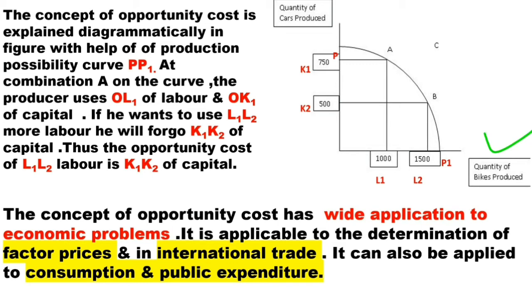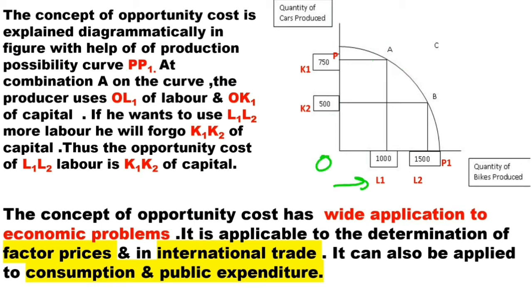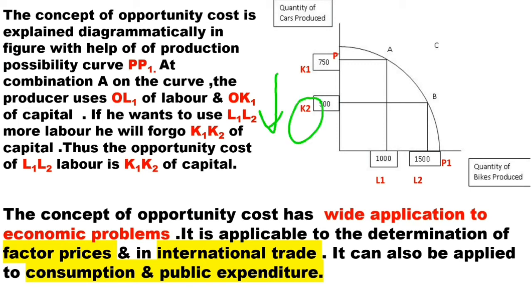On the x-axis, I have the quantity of bikes produced, and on the y-axis, the quantity of cars produced. For this concept, I am using the PPC — Production Possibility Curve. P to P1 is my production possibility curve. At combination A, the producer is using OL units of labour and OK1 units of capital. If the producer wants to increase the quantity of bikes produced, he will use more labour — L1 to L2. For that, he will have to reduce his capital, foregoing K1 to K2 units of capital.